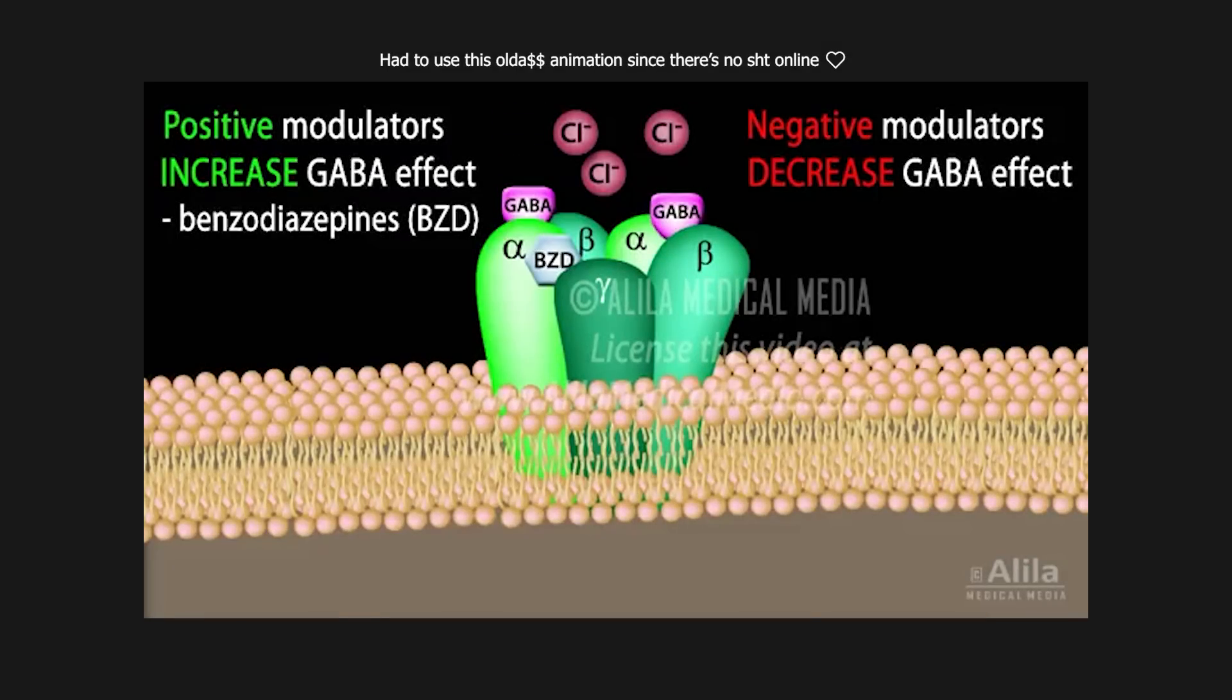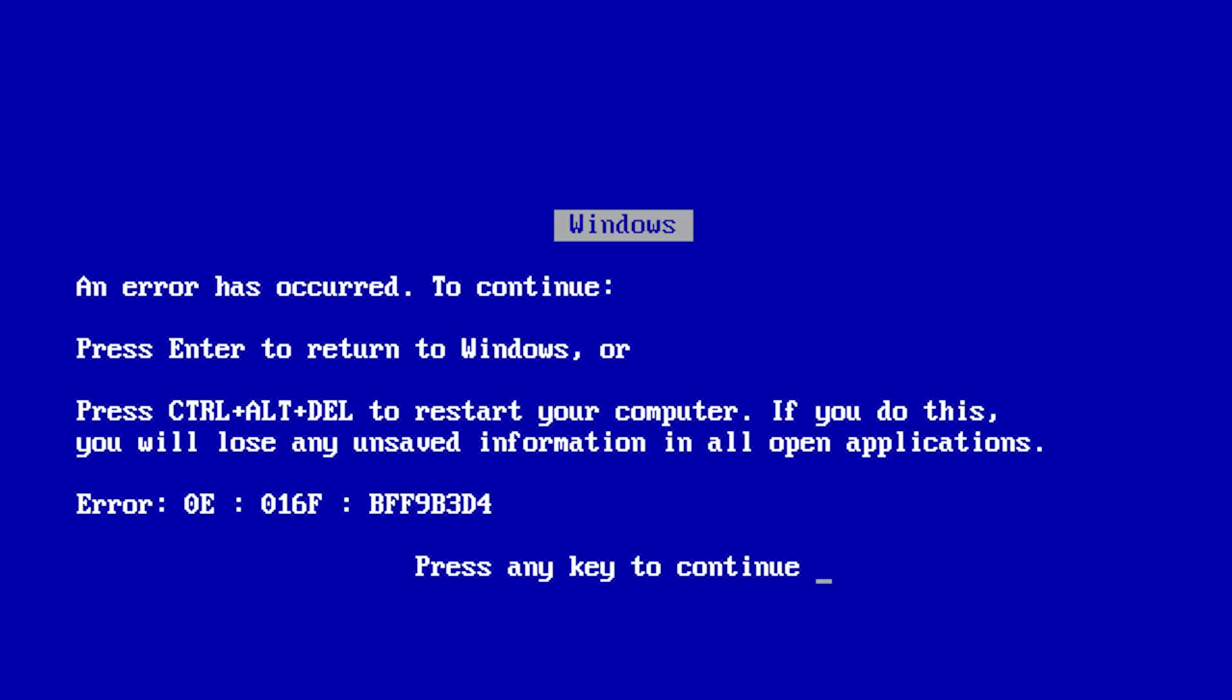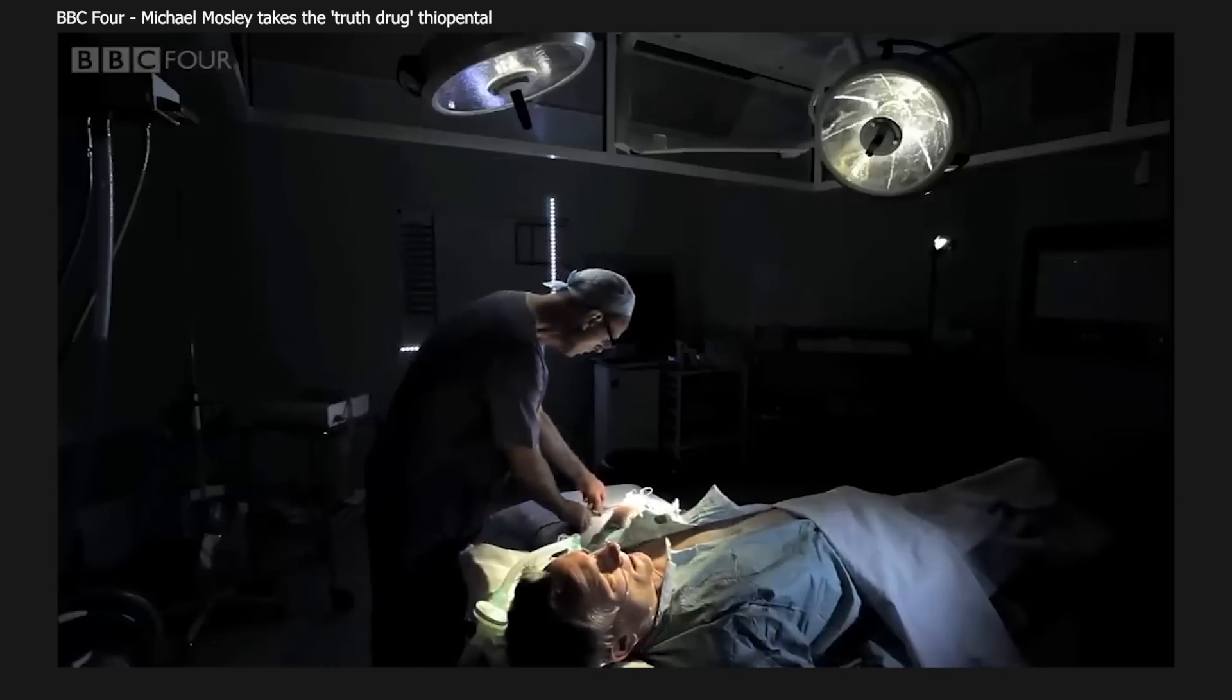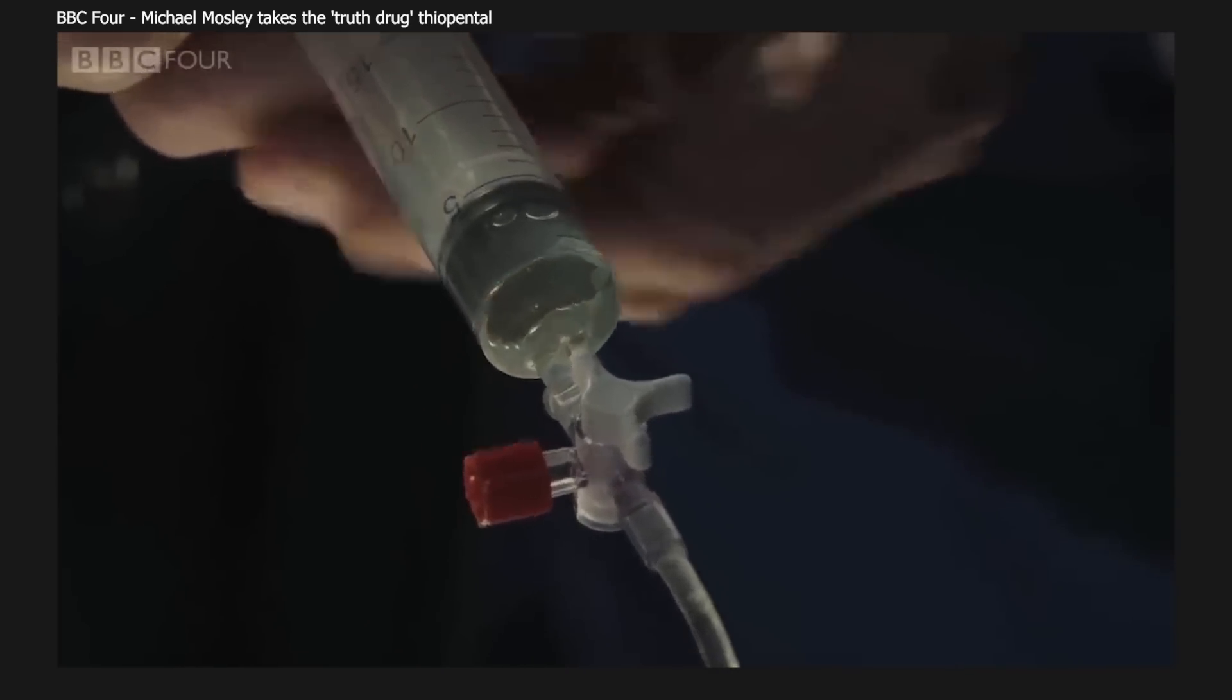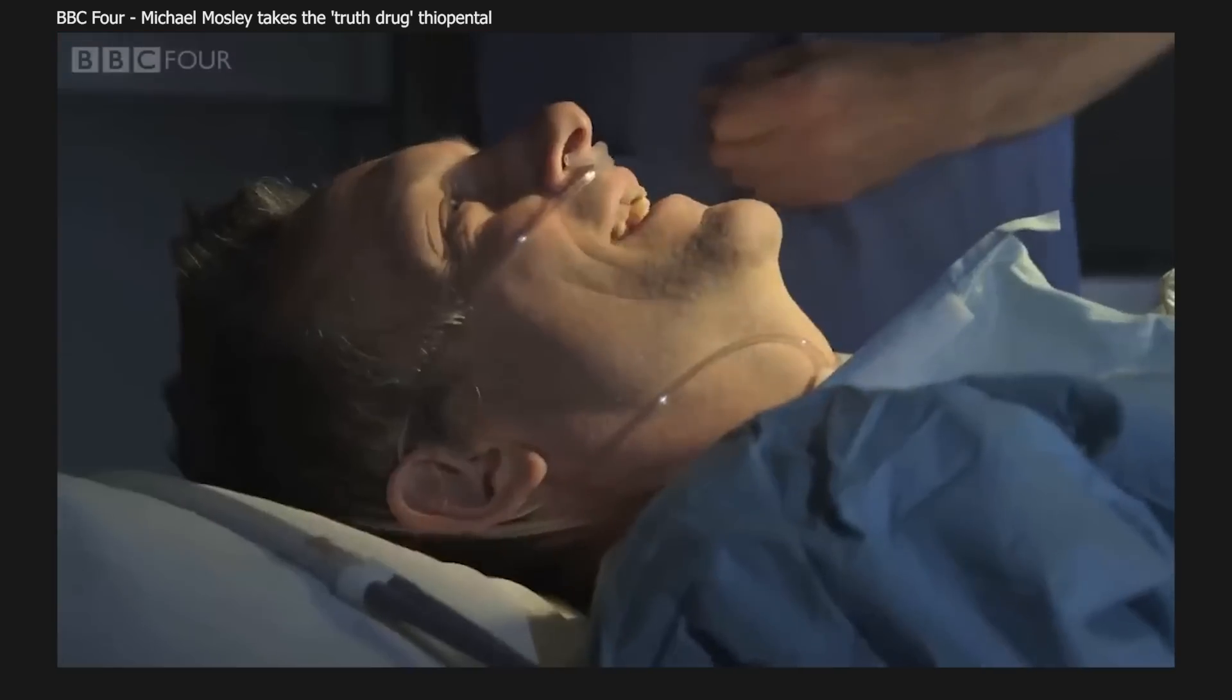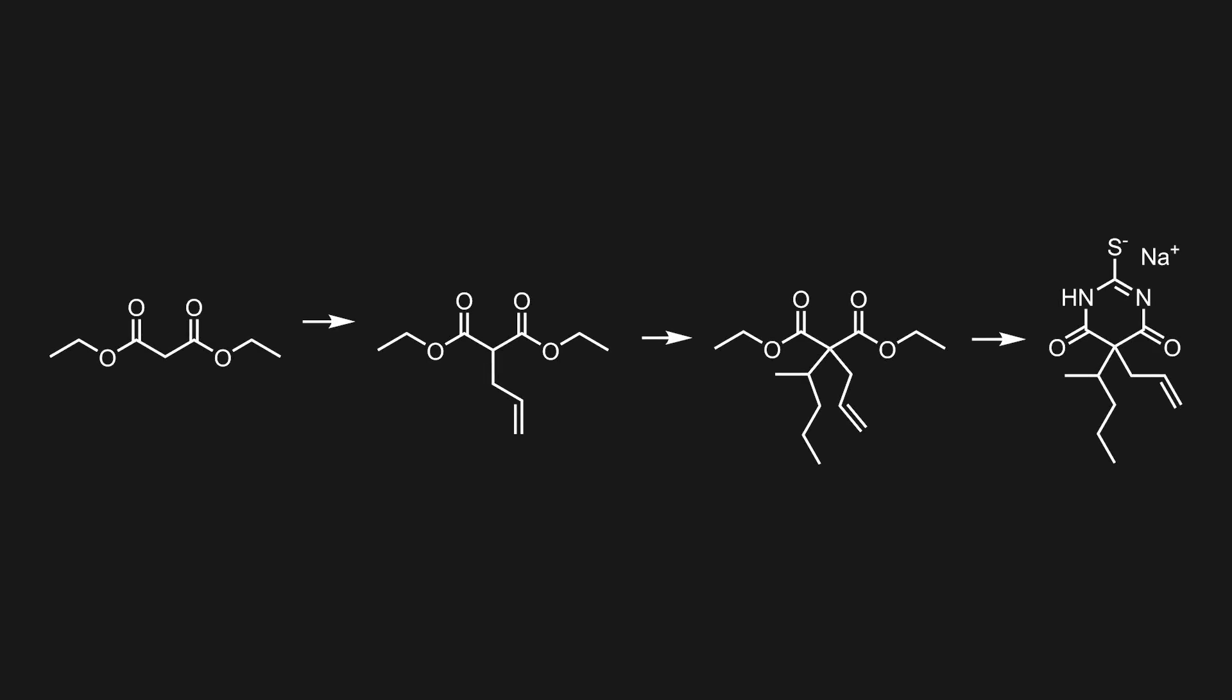At high doses, thiamylal can open the whole GABA receptor without any GABA binding, basically making your body go Windows Blue Screen, because now there is an extreme amount of dampening. If we want to extract the truth, we don't make someone go Blue Screen, just enough to remove any mental blockades against telling the truth. Now that we know how it works, let's take a quick look at the synthesis of thiamylal, which can be adapted easily to make almost any barbiturate.